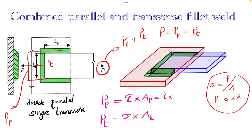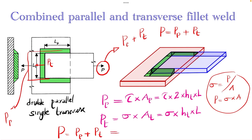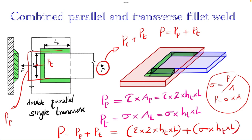Expanding the combined fillet weld equation: the area of the double parallel fillet weld is 2 × ht × lp, and the area of the single transverse fillet weld is ht × l. So the total load P = τ × (2 × ht × lp) + σ × (ht × l). Here ht can be substituted as 0.707h to get the final expression. This is the method for analyzing combined parallel and transverse fillet welds.